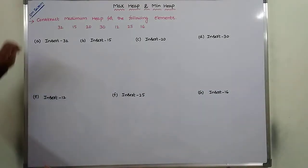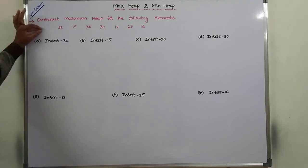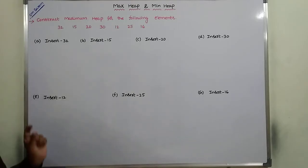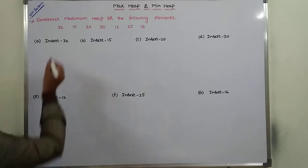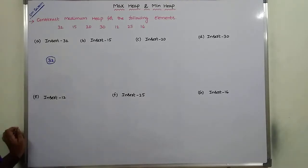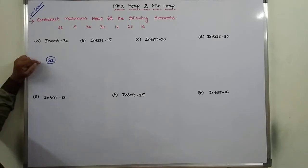First, we have to insert these elements. Insert 32. Initially, the maximum heap is empty. Whatever element we insert first becomes the root element in the maximum heap. So 32 is inserted into the maximum heap. Since it is empty, a single node is also a maximum heap.